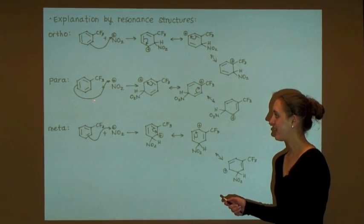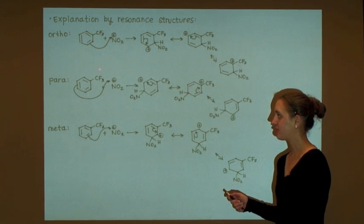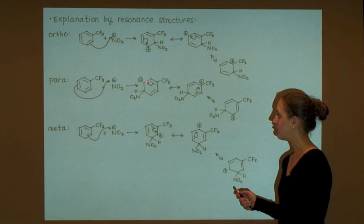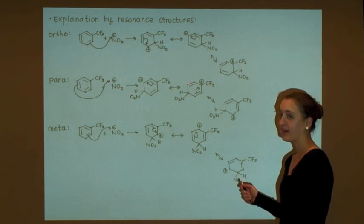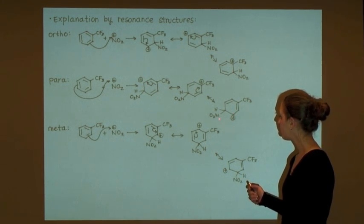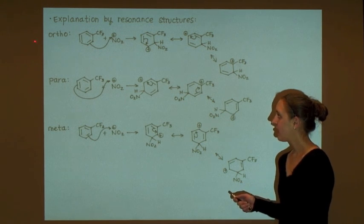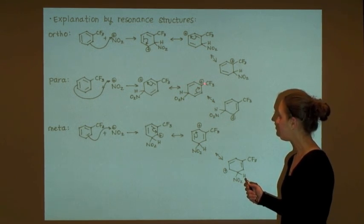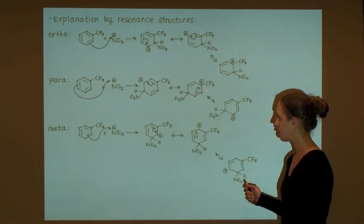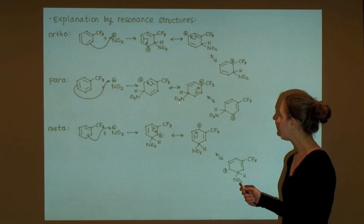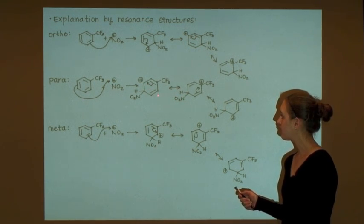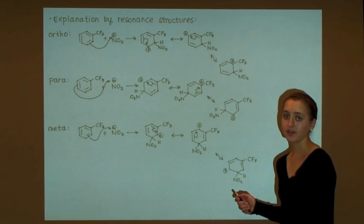When the nitronium ion attacks the position that is para to the trifluoromethyl group, it results in an arenium ion where the positive charge is ortho, para, and ortho to the newly installed nitro group. As in the ortho case, when the positive charge is adjacent to the electron-withdrawing trifluoromethyl group, this resonance structure is destabilized. Therefore, the arenium ion intermediate is destabilized, and the rate of production of this intermediate is relatively slow.